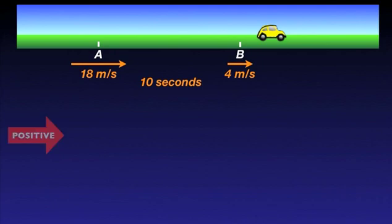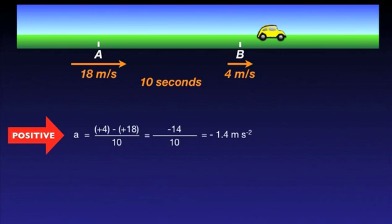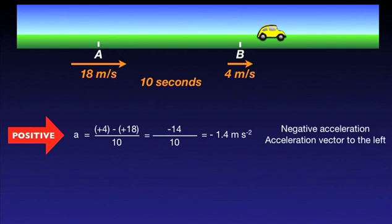If we choose the positive direction to the right, so it coincides with the direction of motion, the acceleration is final velocity minus initial velocity divided by time. In our case, the change in velocity is plus 4 minus plus 18 equals minus 14 meters per second. Divided by 10 seconds, this gives us an acceleration of minus 1.4 meters per second squared. I use the plus signs to emphasize the direction of the velocities. The negative sign of the acceleration tells us that the direction of the acceleration is to the left.